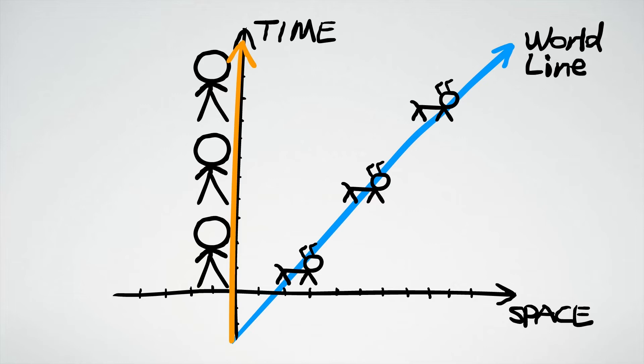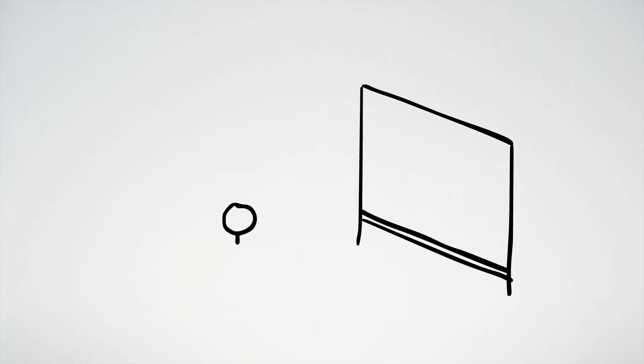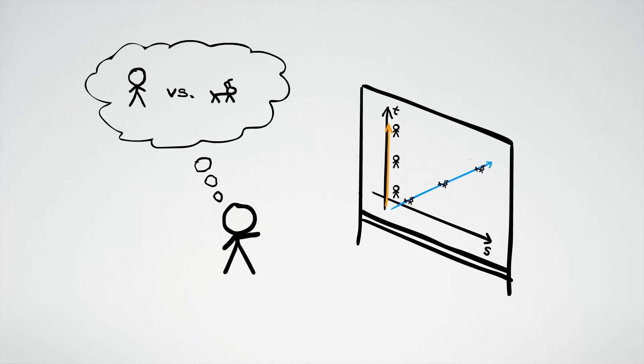The question we're interested in is what do things look like from different moving perspectives. To answer this question, we first need to understand how to determine from what perspective a particular space-time diagram is drawn.